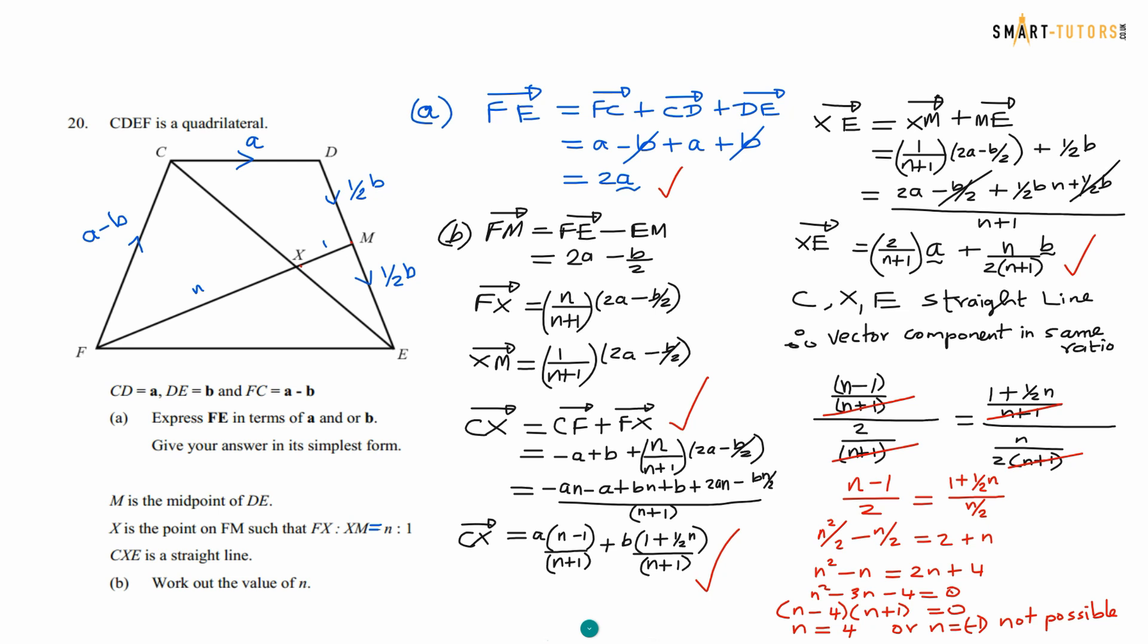So the vector component means the component of the A, N minus 1 over N plus 1, N minus 1 over N plus 1 divided by the vector component of the A here, 2 over N plus 1, 2 over N plus 1 that is divided by equal to the other vector. The other vector is the B vector. What is the coefficient? 1 plus half N over N plus 1 divided by the XE vector N over 2N plus 1. So if you cancel everything common one, you end up with N minus 1 over 2 equal 1 plus half N over N by 2. So you cross multiply N by 2 times N is N squared over 2 minus N over 2. 2 times 1 is 2. 2 times half N is N. You rearrange, you get a quadratic equation, but N is the ratio. Cannot be in a negative answer. So the positive answer 1 possible, N equal 4. So that is the end of the GCSE 2019 paper 2.